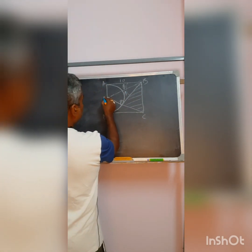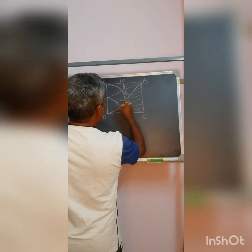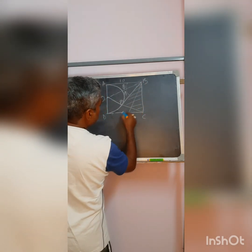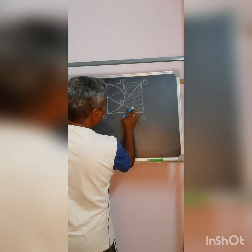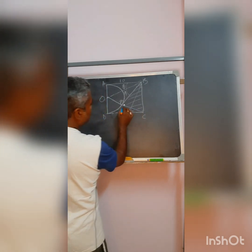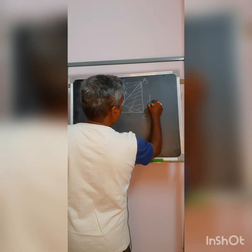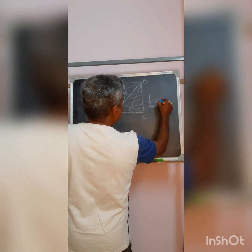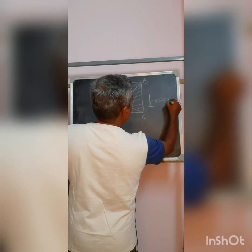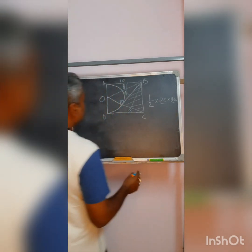Let me name the points — I name this as O, and I draw a perpendicular to this, let us say it is touching at Q. Why am I drawing this line? Because the area of the triangle I will get with half into base, base means PC, and the vertical BQ. So if I can find all these values, I can get it easily.